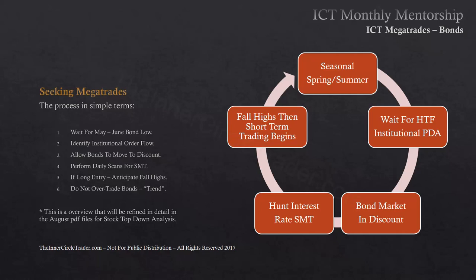When looking for a mega trade, the first thing you're looking for is a seasonal tendency that forms in late spring and early summer — the May-June bond low. The next stage is identifying institutional order flow, waiting for a higher time frame institutional PDA. You're anticipating bullishness on the seasonal tendency between May and June, identifying institutional order flow, waiting for signs on a higher time frame that the market should be looking for higher prices — and when the market goes into a discount market, you have a stage that's properly set.